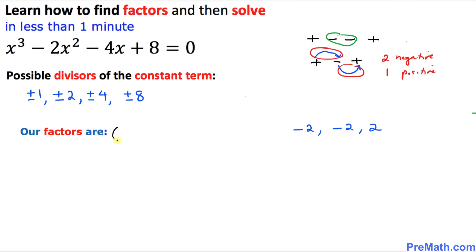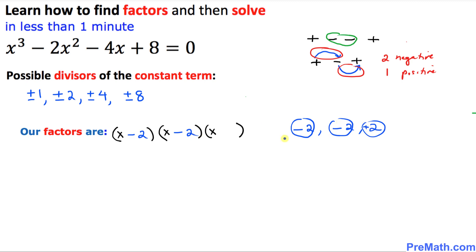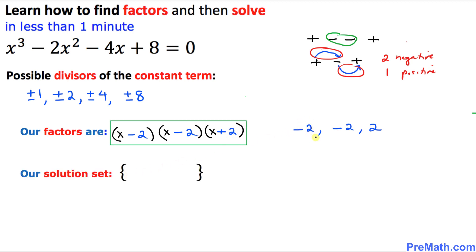Our factors are three parentheses: we put x in each, then the numbers we found — (x − 2)(x − 2)(x + 2). Finally, our solution set is the same numbers with signs changed: negative 2 becomes positive 2, negative 2 becomes positive 2, and positive 2 becomes negative 2. So our solution set is positive 2, positive 2, and negative 2.